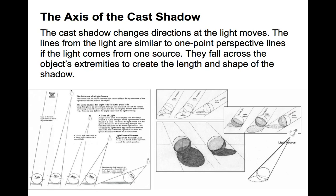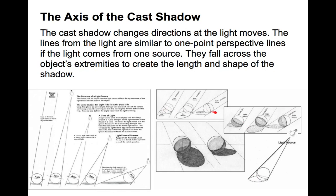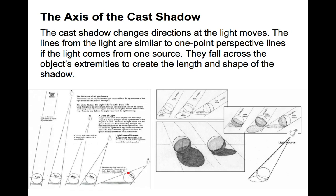The axis of the cast shadow: The cast shadow changes direction as the light moves. The lines from the light are similar to one-point perspective lines if the light comes from one source, and they fall across the object's extremities to create the length and shape of the shadow. You can draw lines from the light source across the edges of a form to get the extent of the cast shadow. Also, the closer the light is to the object, the smaller the area of light on the sphere; as the light gets further away, the light area gets bigger.